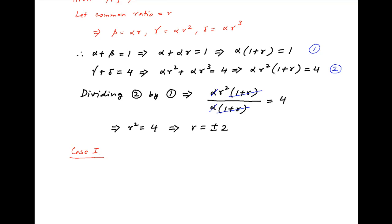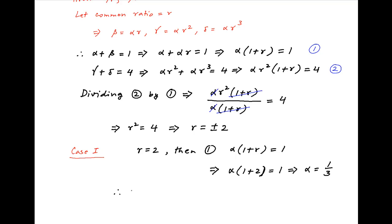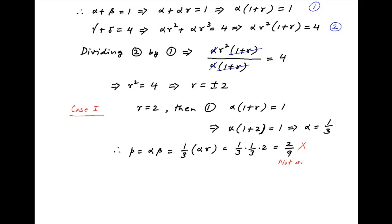Consider the first case when r equals plus 2. Result 1 gives alpha times (1 plus 2) equals 1, which implies alpha equals 1 upon 3. Therefore, p equals alpha times beta equals (1/3) times (1/3) times 2, which equals 2 upon 9. This is not an integer, as required in the problem statement, and is therefore ruled out.